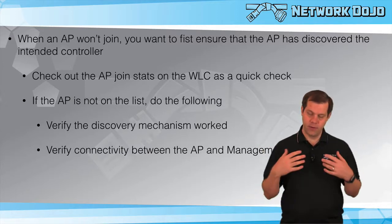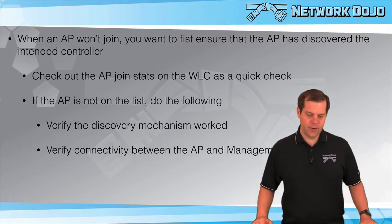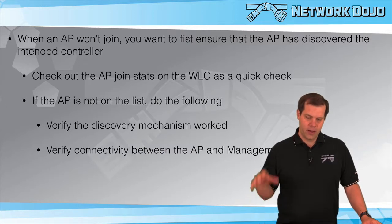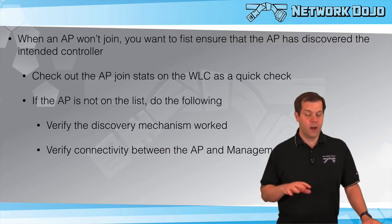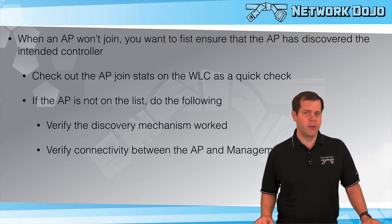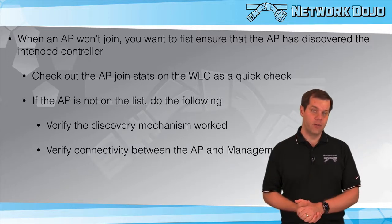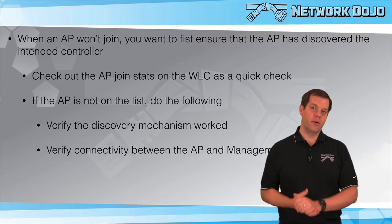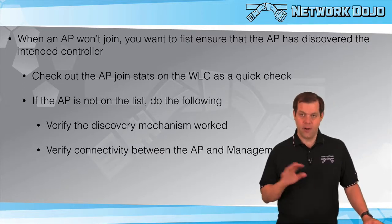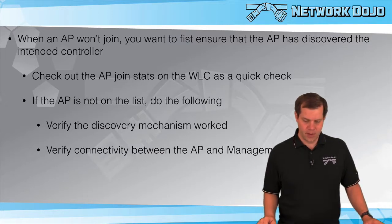Usually we release our IP address and start the whole process over again. As we try to figure out why our AP is not joining a controller, we want to first figure out: is the problem with discovering the controller, or is the problem with joining the controller? If we can immediately realize it's trying to join the controller, we can completely eliminate all that discovery troubleshooting and just focus on the join process. Whereas if we don't ever see it attempting to join a controller, we have to worry about discovery and then potentially join issues following that.